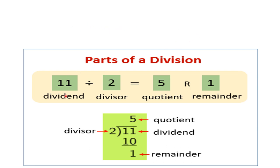For example, see here 11 divided by 2. We have to divide 11 by 2. We will write it using the division symbol, with 11 inside and 2 here. 11 is the dividend — the number which is divided. And 2 is the divisor — the number by which we divide.